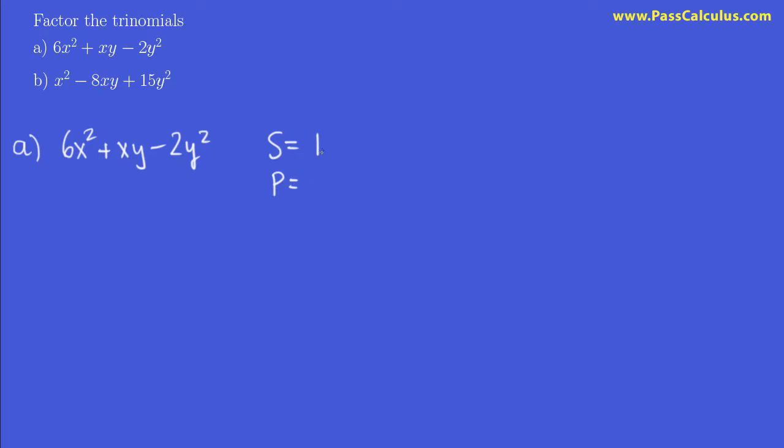So our sum has to turn out to be 1. The product is 6 times negative 2, which is negative 12. So let's think about what two numbers have a product of negative 12 and a sum of 1. I think we could take 4 and negative 3. 4 times negative 3 is negative 12. 4 plus negative 3 is positive 1.